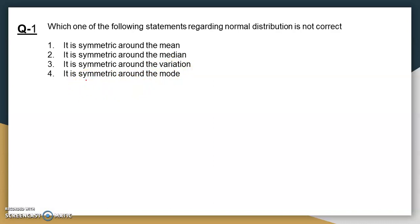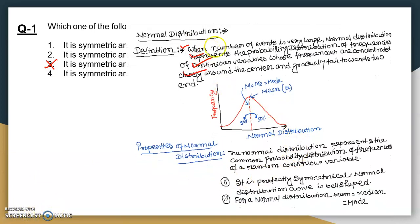In case of normal distribution, we get the bell-shaped curve, and here the mean equals median equals mode. That means it is symmetric around the mean, symmetric around the median, and symmetric around the mode. Normal distribution represents the probability distribution of frequencies of a continuous variable whose frequencies are concentrated closely around the center and gradually fall towards the two ends.